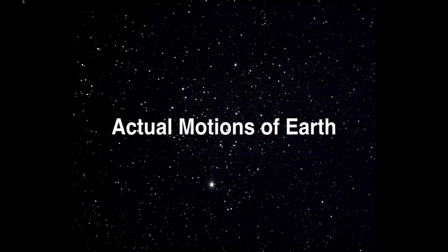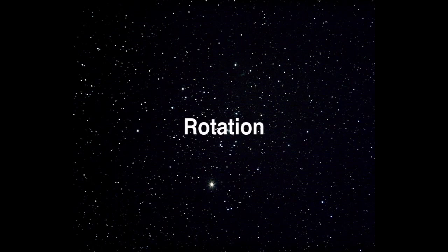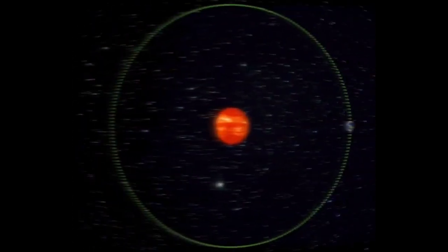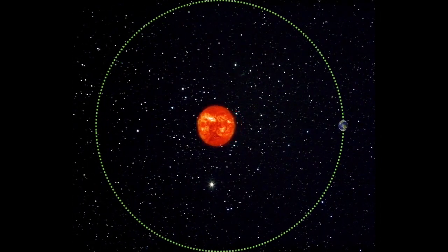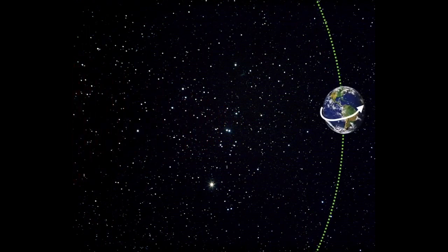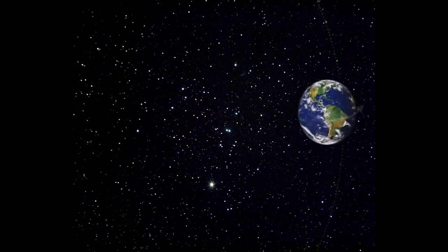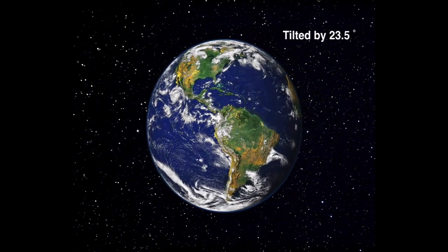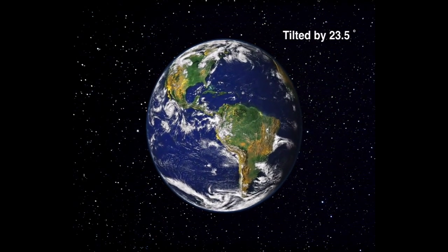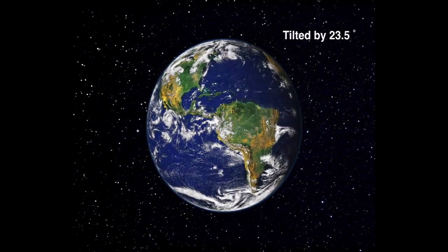Actual motions of Earth are real motions — motions that are actually happening. The first motion we're going to talk about is rotation. Rotation happens when the Earth turns about its imaginary axis. Picture the Earth tilted 23.5 degrees from the perpendicular.